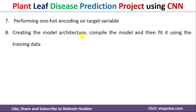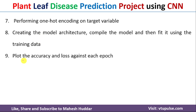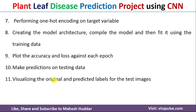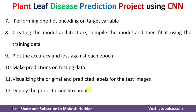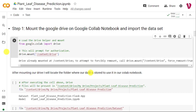The eighth step is to create the model architecture, compile the model, and then fit it using the training data. Once you train your model, we need to plot the accuracy and loss against each epoch, then make predictions on the testing data and visualize whether those predictions are correct. If everything looks correct and the expected accuracy has been reached, you can deploy the project using a Streamlit application. Now we will discuss the implementation of each of these 12 steps one by one.